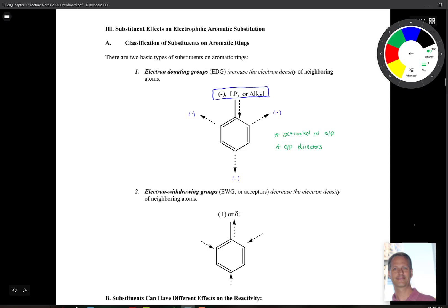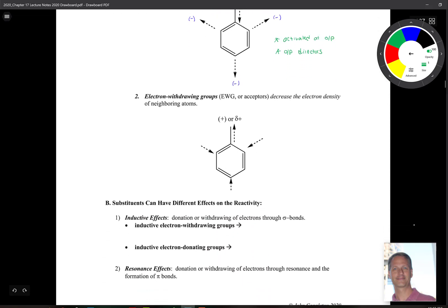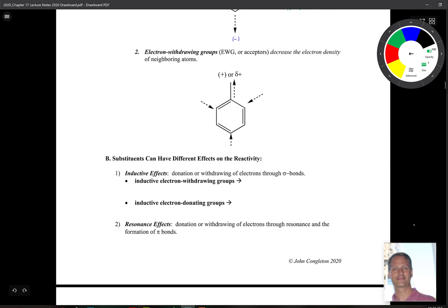Now, the other type of substituent is an electron withdrawing group. So these decrease electron density of the neighboring atoms. So these either have, as a substituent, they either have a full positive charge or a delta plus charge. So we saw one example of an atom that has a full plus charge. Do you remember the nitrogen of the nitro group? That's another example. Now, this is going to decrease electron density at ortho and para, which essentially means that you're deactivated here.